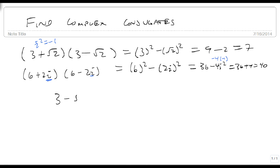So if I have the term 3 minus 5i, then my complex conjugate is 3 plus 5i. If I have 2 plus 4i, then my complex conjugate is 2 minus 4i.